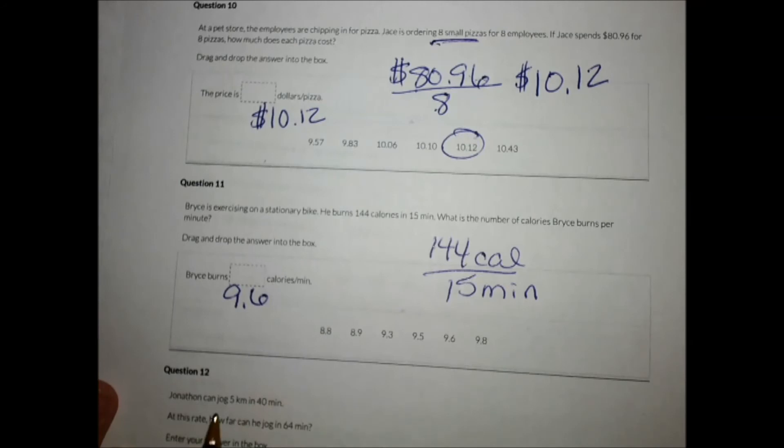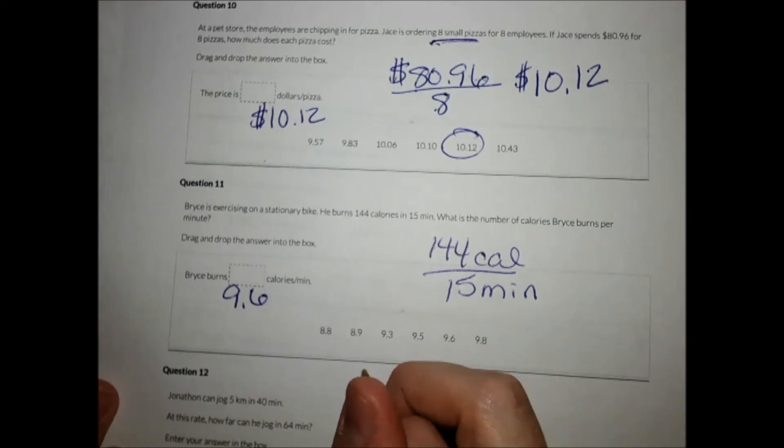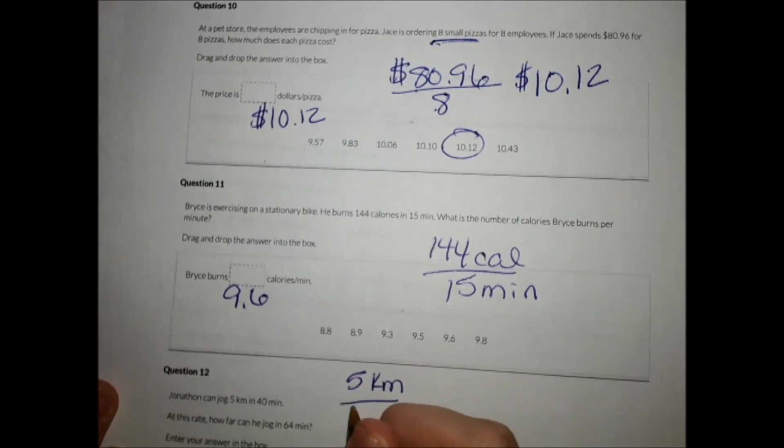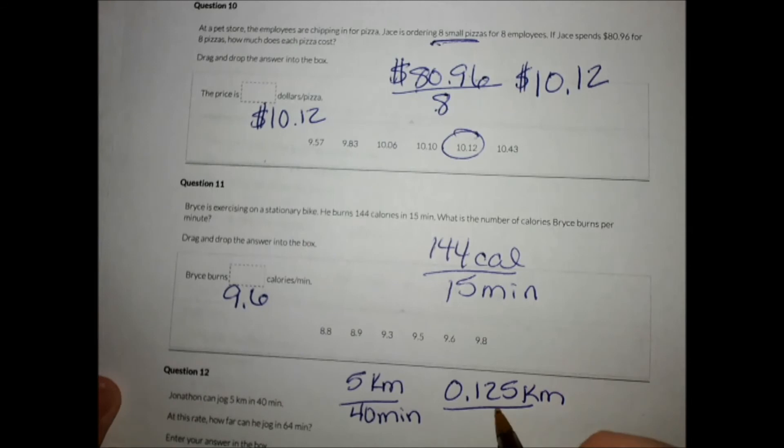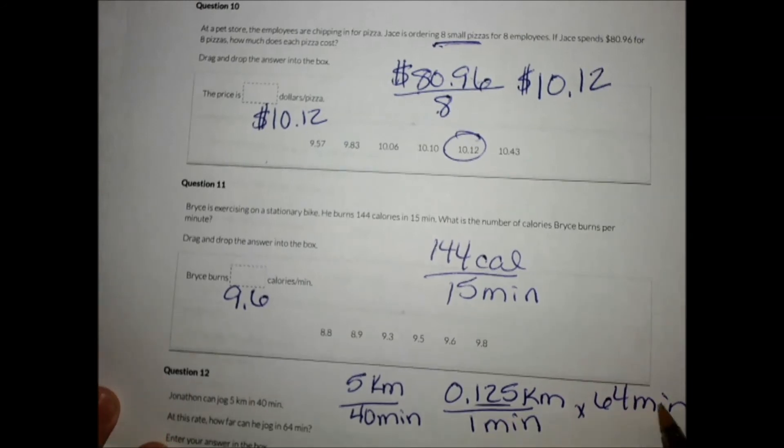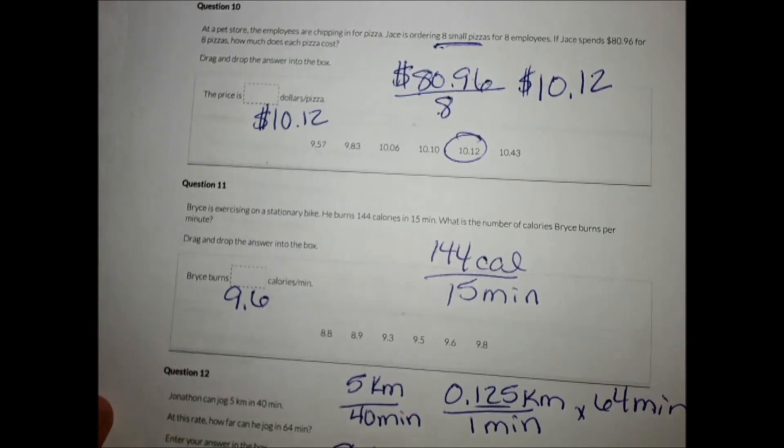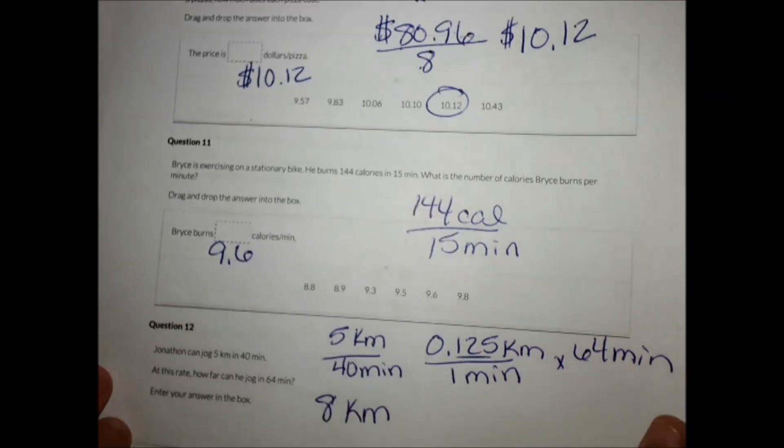Number 12. Jonathan can jog five kilometers in 40 minutes. So I'm going to divide 5 by 40. So that tells me he can jog this much of a kilometer, 0.125 of a kilometer per one minute. At this rate, how far can he go in 64 minutes? So now all I'm going to do is multiply this amount by 64 minutes, and I do get eight kilometers. You could have set that up a little differently if you would like, but it all works out the same way.